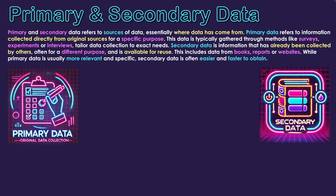We're going to distinguish between what those two categories of sources are. Firstly is primary data, which refers to information collected directly from original sources for a specific purpose. You go out and actually get the data from your targeted audience, or you conduct experiments yourself and gather that data firsthand. This data is typically gathered through methods like surveys, experiments, or interviews, tailored to the exact needs of the people doing the research or development.